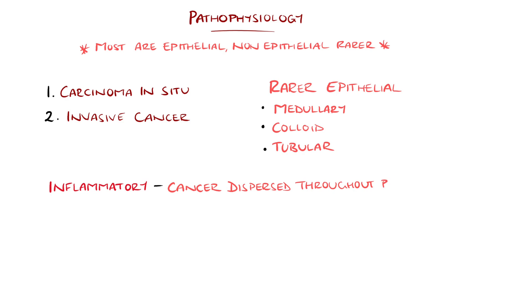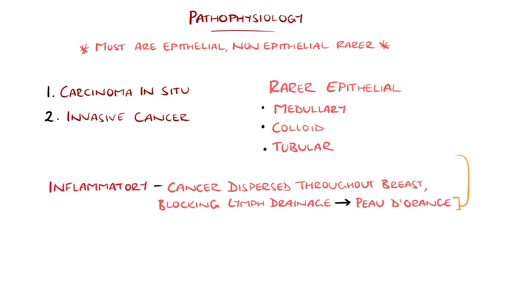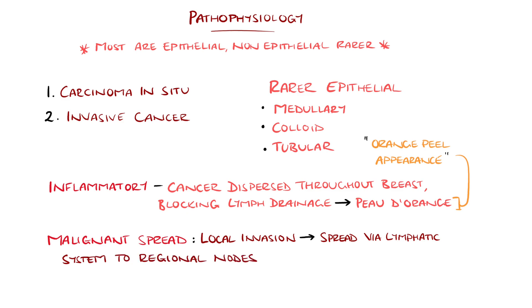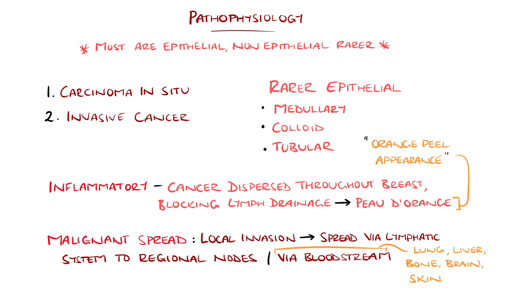Inflammatory breast cancer particularly features dispersion of the cancer throughout the breast rather than a specific mass, resulting in blockage of lymph nodes and development of the peau d'orange appearance, meaning orange-peel appearance. Malignant cells can invade locally, then spread via lymphatics to regional nodes, or can disseminate through the bloodstream to distant organs, most commonly the lungs, liver, bone, brain, and skin.